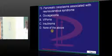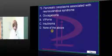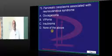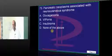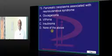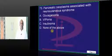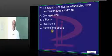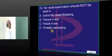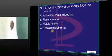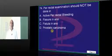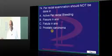Which neurocutaneous syndrome are pancreatic tumors associated with? The answer is none — there are no neurocutaneous syndromes associated. Necrolytic migratory erythema is associated with glucagonoma, but that is a paraneoplastic manifestation, not a neurocutaneous syndrome. Therefore D is correct. Even if you want to do a PR examination in this context, the patient will not allow it — so the answer is anal fissure.